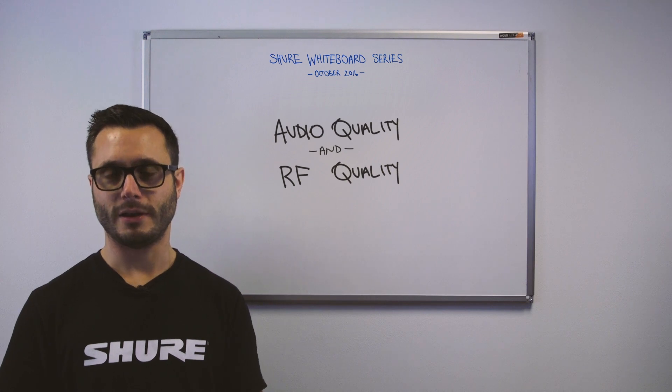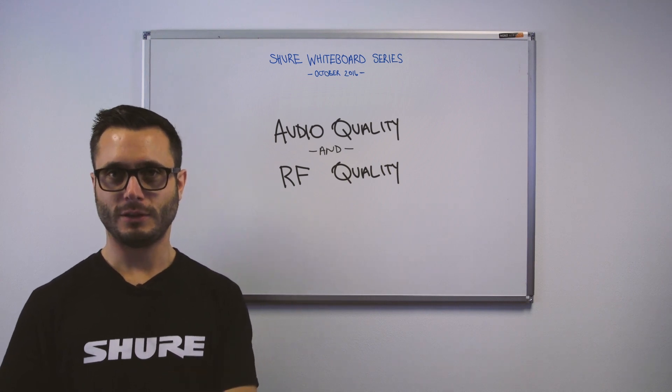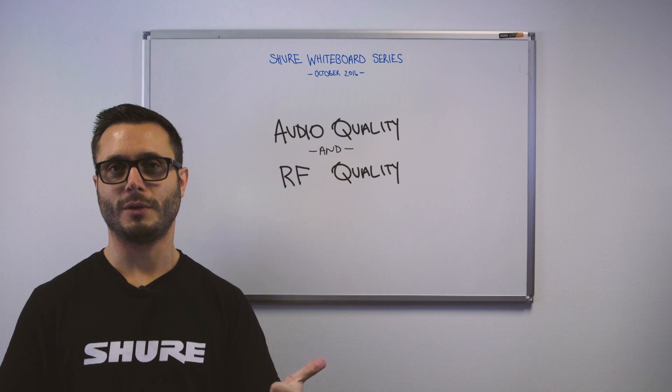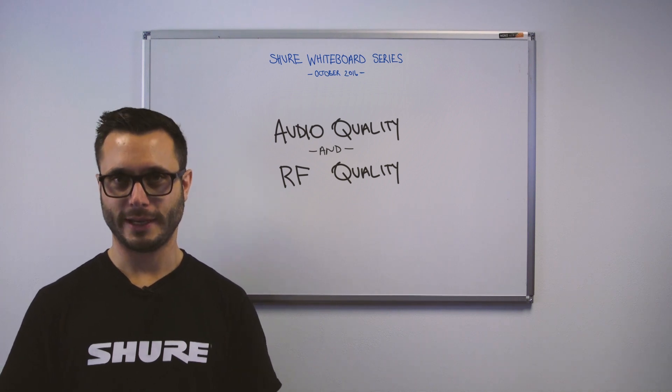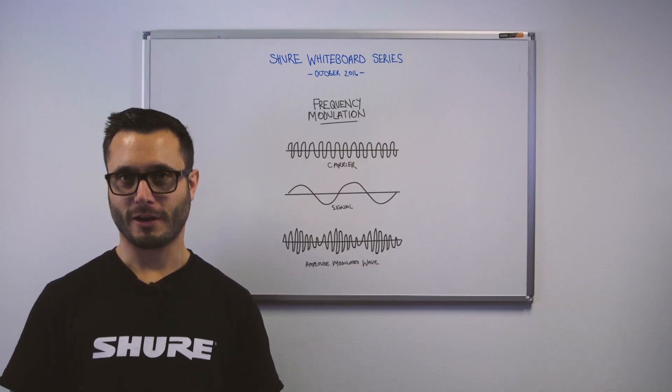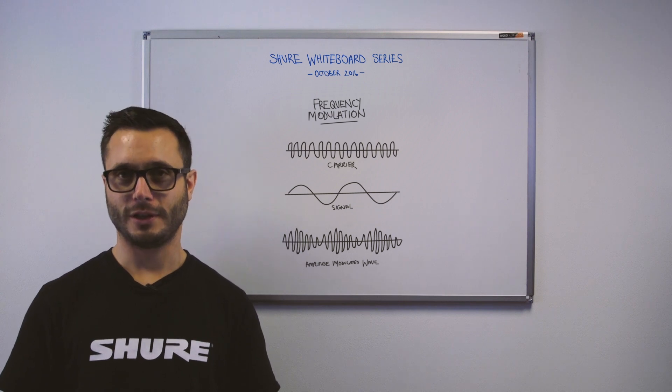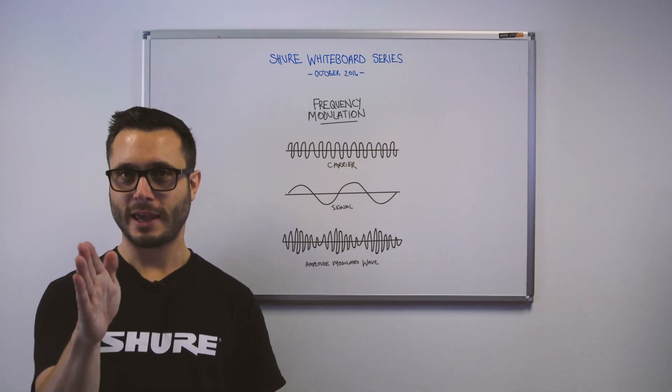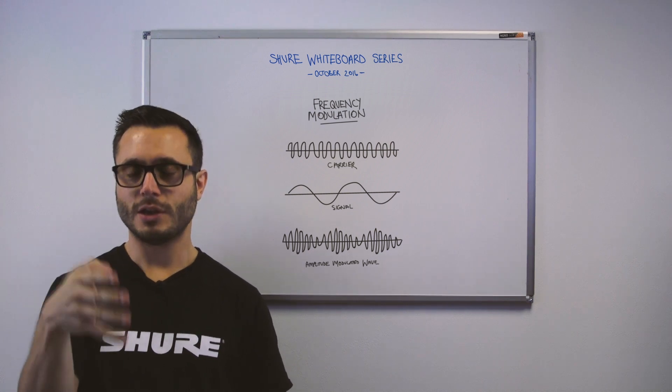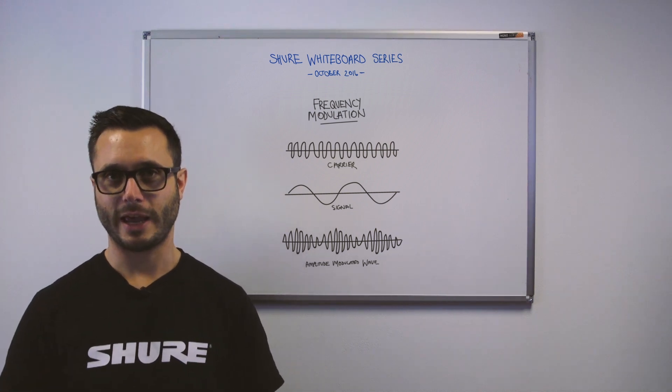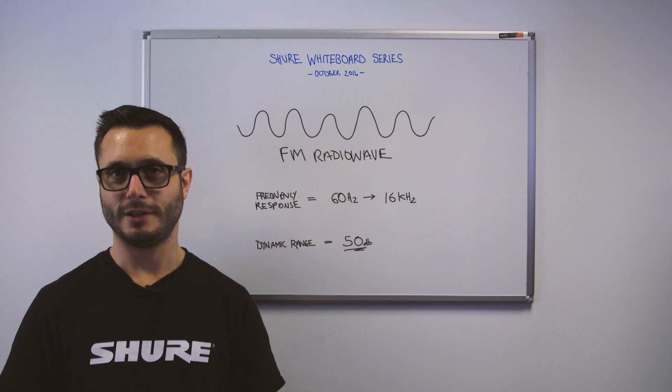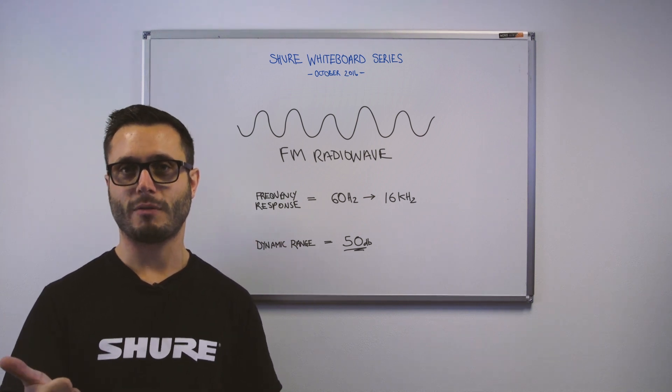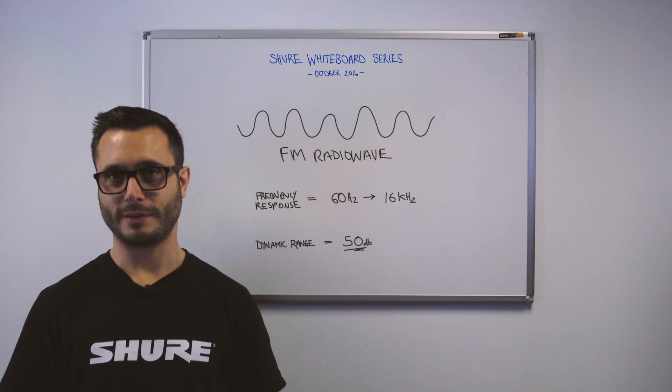But the two main key components between analog and digital, where things differ, are firstly audio quality and RF quality. The majority of analog radio microphones will use frequency modulation to carry the signal. This is where the frequency that they operate at is varied ever so slightly during the time that the transmission is on air. There are some physical limitations to frequency modulation.